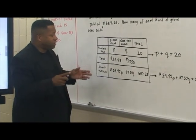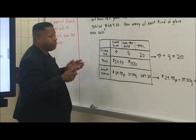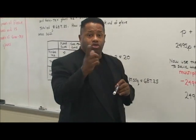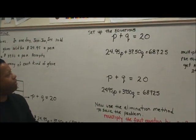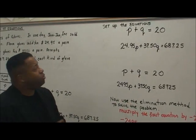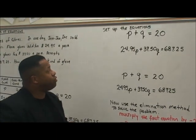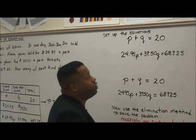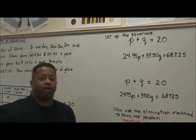Now with this in mind we can set up the equation because we know what's given and we know we need to find to get the solution. So we want to set the equation up. P plus G which is equal to 20 and of course 24.95P plus $37.50G which is equal to $687.25.